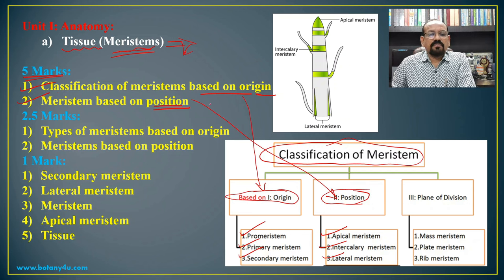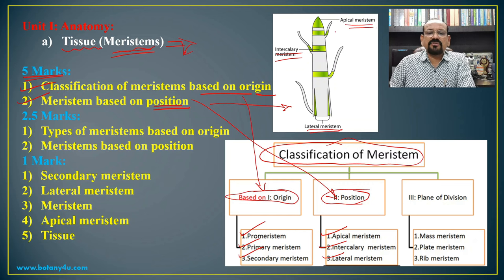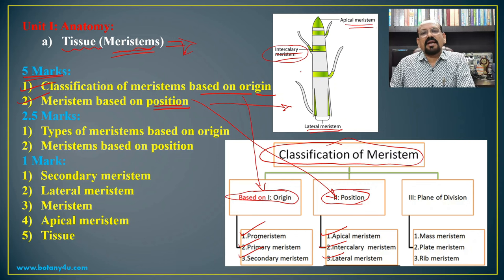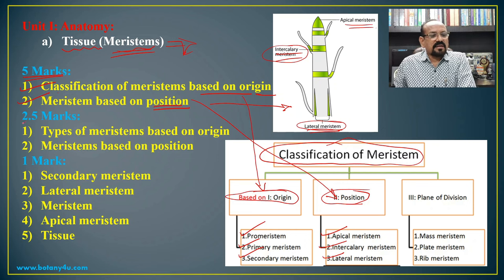Based on position, you should draw the diagram showing apical meristem, intercalary meristem, and lateral meristem. Apical meristems increase the length of the plant or branch. Intercalary meristems are involved in lateral growth, including the development of leaves and branches, while lateral meristems are responsible for lateral growth — the increase in girth or diameter. For 2.5 mark questions, the same questions on meristem based on origin and position are asked.